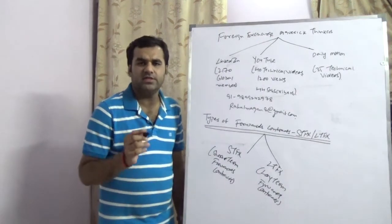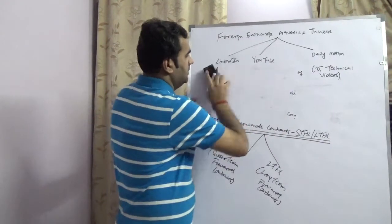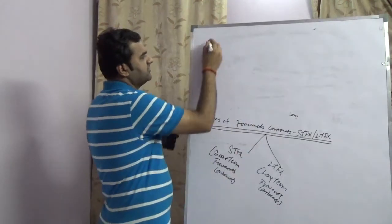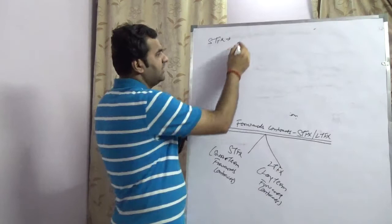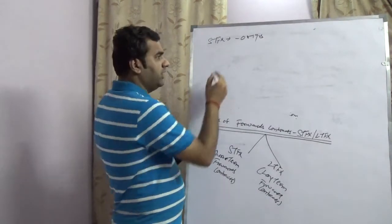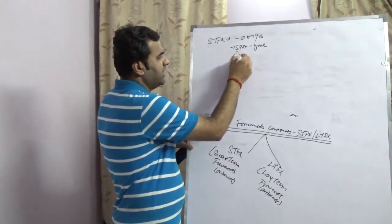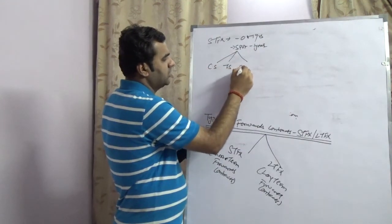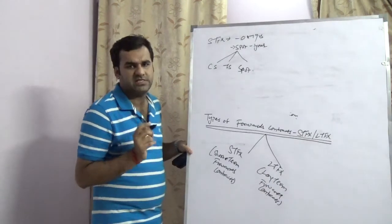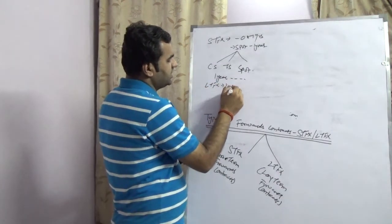STFX forward contracts means any forward contract taken up by a company between a period of 0 to 1 year. This is known as short term forward contract. Technically speaking, this is spot to 1 year, because before spot you have 2 days — before spot, tom spot, and spot. So anything from spot till 1 year is known as short term forward contract, also referred to as STFX. Anything greater than 1 year till any tenor is known as LTFX, which is also known as long term forward contracts.